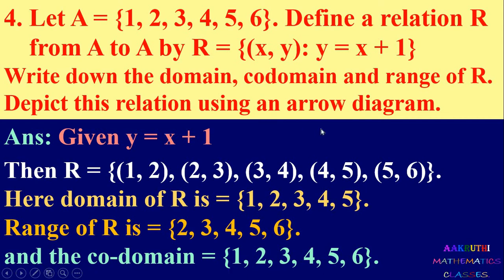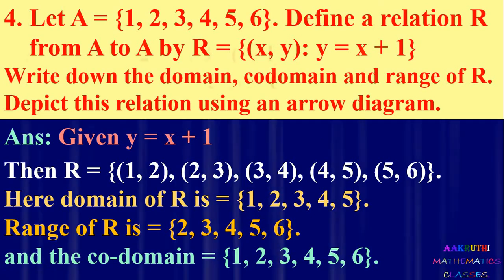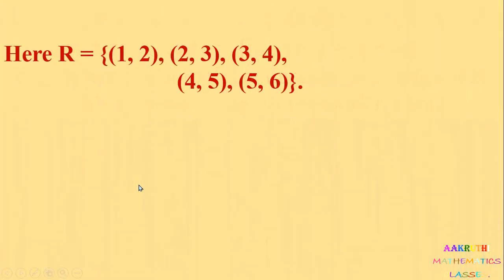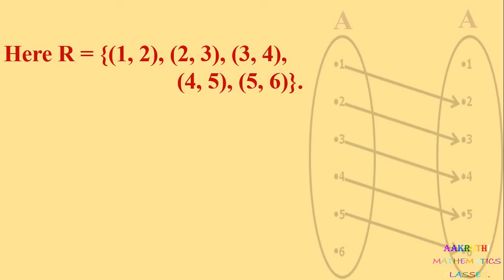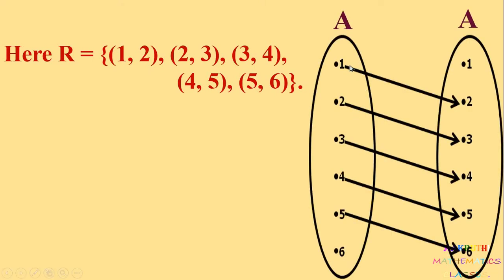We represent this relation in an arrow diagram. The relation is {(1,2), (2,3), (3,4), (4,5), (5,6)}. We write the first set containing {1, 2, 3, 4, 5, 6} and the second set also {1, 2, 3, 4, 5, 6}. The relation maps: 1 related to 2, 2 related to 3, 3 related to 4, 4 related to 5, and 5 related to 6. This is the arrow diagram for the given relation.